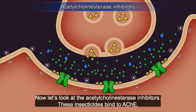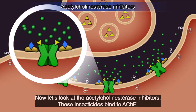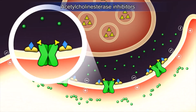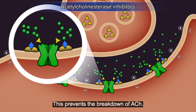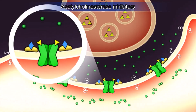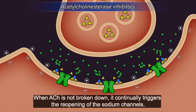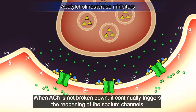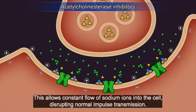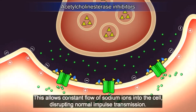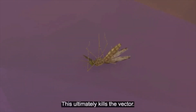Carbamates and organophosphates are acetylcholinesterase inhibitors. These insecticides bind to ACHE. This prevents the breakdown of ACH. When ACH is not broken down, it continually triggers the reopening of the sodium channels. This allows a constant flow of sodium ions into the cell, disrupting normal impulse transmission. This ultimately kills the vector.